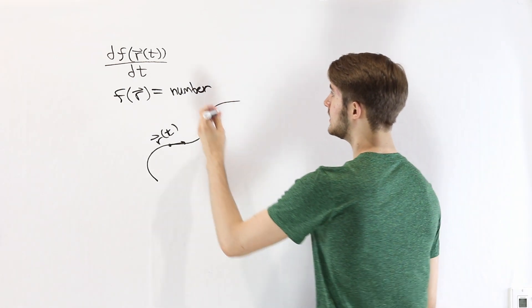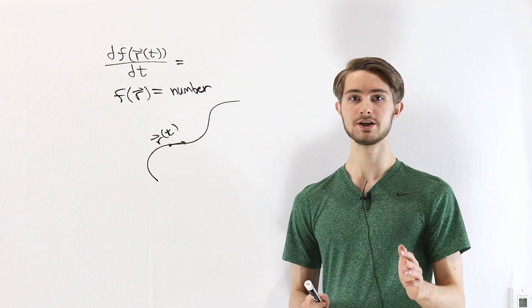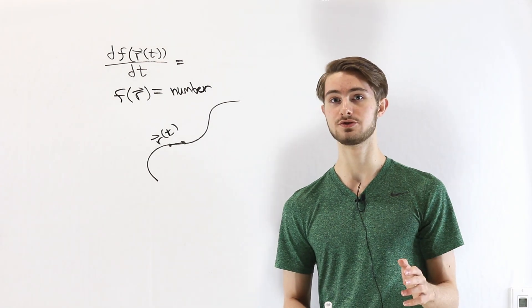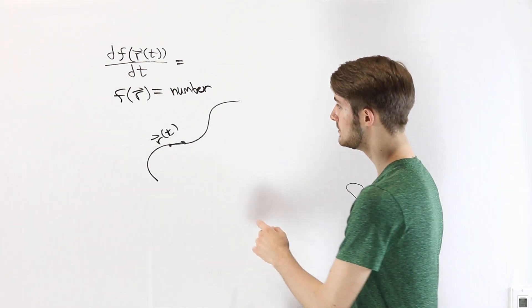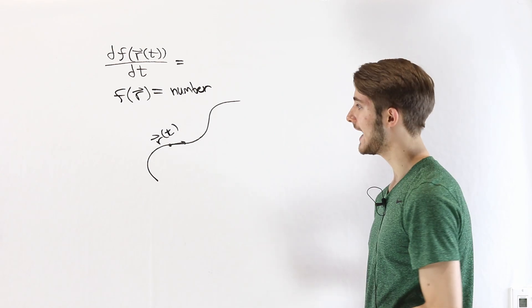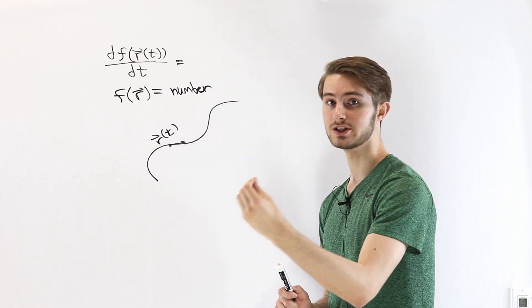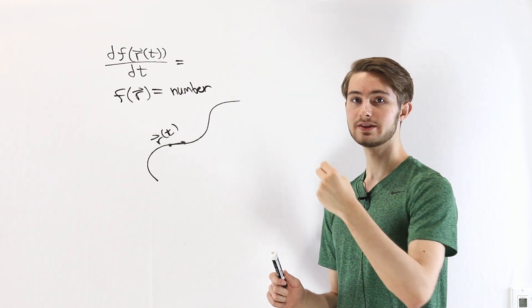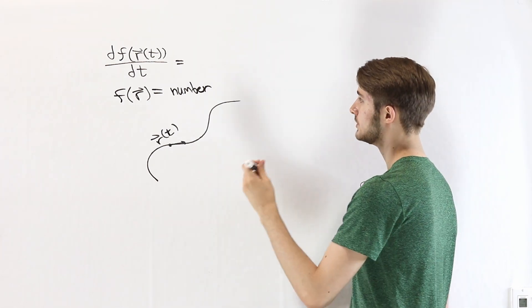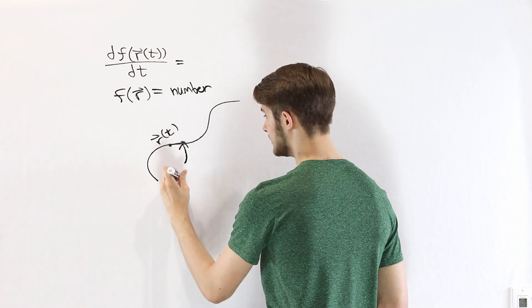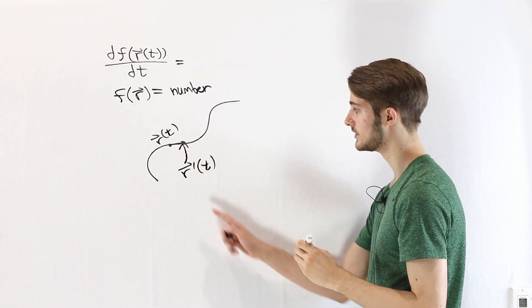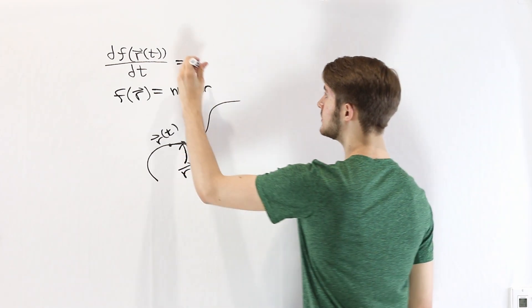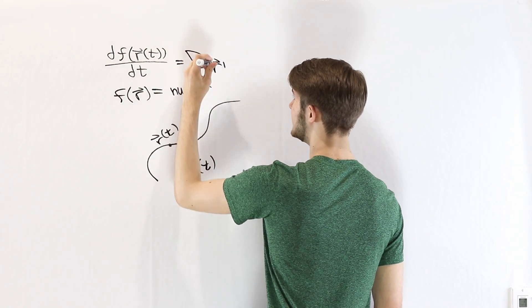One way that we can represent that is with a directional derivative. I have another video on directional derivatives — you can check the link in the description. The first thing we need to do to calculate a directional derivative is figure out in what direction we are moving. We know that we're moving along the path of r(t), but at a particular point, the vector that represents the direction we are moving is the derivative r'(t). So if we want the derivative in the direction of this curve, we take the directional derivative in the direction of r'.